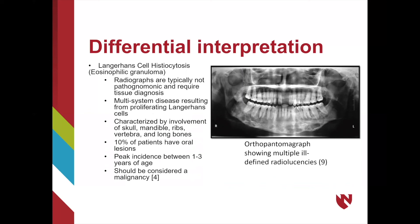Finally, Langerhans cell histiocytosis should be considered. These lesions do not exhibit pathognomonic radiographic features and require diagnosis via tissue biopsy. Unlike Staphne defect, Langerhans cell histiocytosis is a multi-systemic disease and lesions will most likely exist outside the oral cavity such as the skull, ribs, vertebrae, and long bones. Only 10% of Langerhans cell histiocytosis patients will suffer from oral lesions. This disease will present early in life, generally around one to three years of age, and should be considered a true malignancy. The panoramic shown displays eosinophilic granuloma lesions below the mandibular canal, where one would expect to find Staphne defect. A distinguishing feature is the presence of multiple radiolucencies affecting multiple quadrants, whereas Staphne defect is predominantly always a single defect.